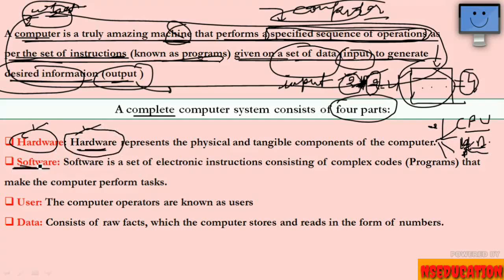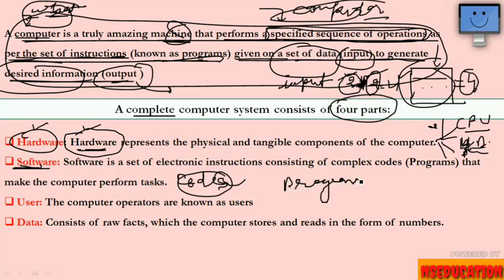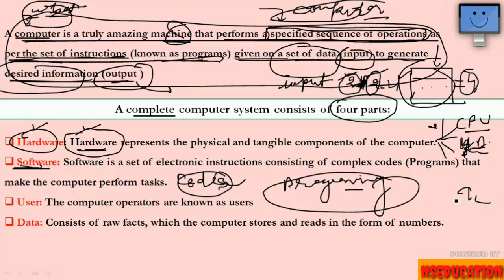Next is software. Software is the computer's programming. The processor needs instructions to work. When we give a direct command to the computer processor, it doesn't understand it because the processor's language is something else — it is 0 and 1, binary. So programming is done in 0 and 1.